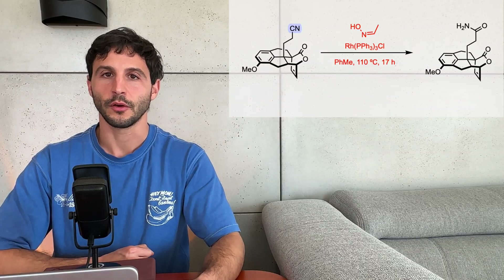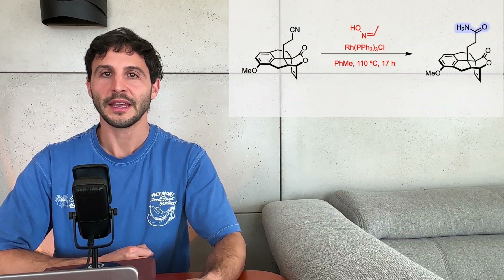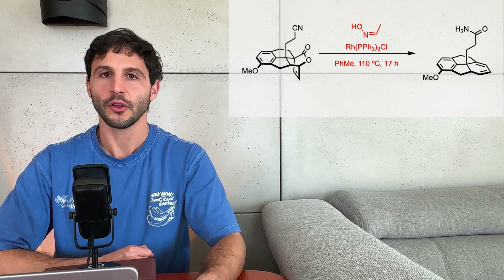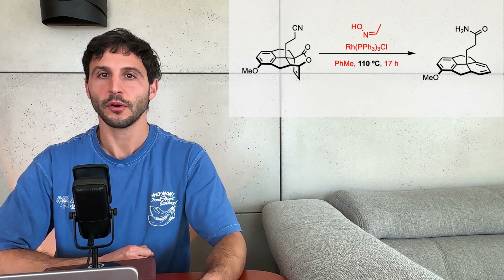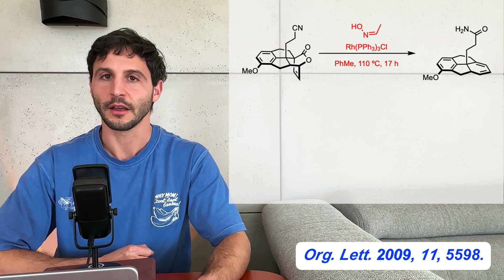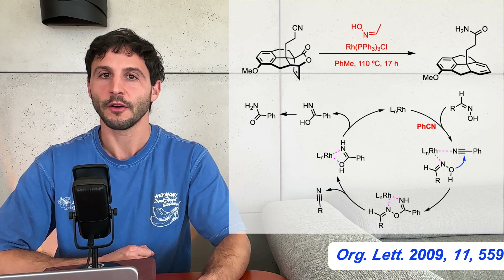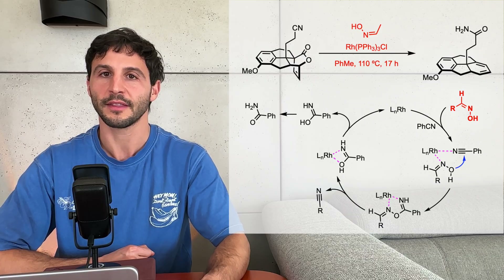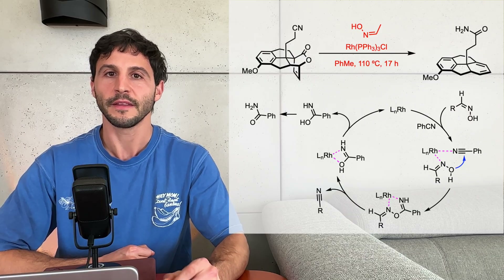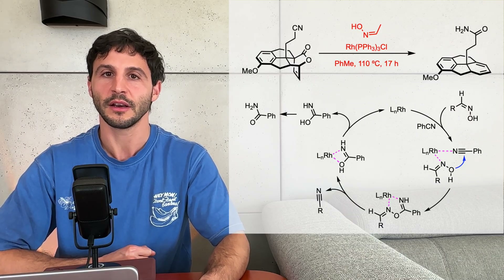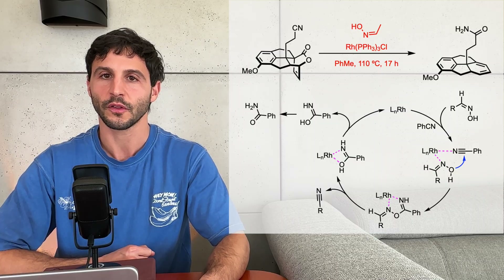Hydration of the nitrile group produces a carboxamide intermediate, which undergoes decarboxylation of the lactone ring due to the high temperature required for the reaction. These conditions allow for the hydrolysis of nitriles to amides using aldoximes as the water source, all in the presence of a rhodium catalyst under neutral and anhydrous conditions.